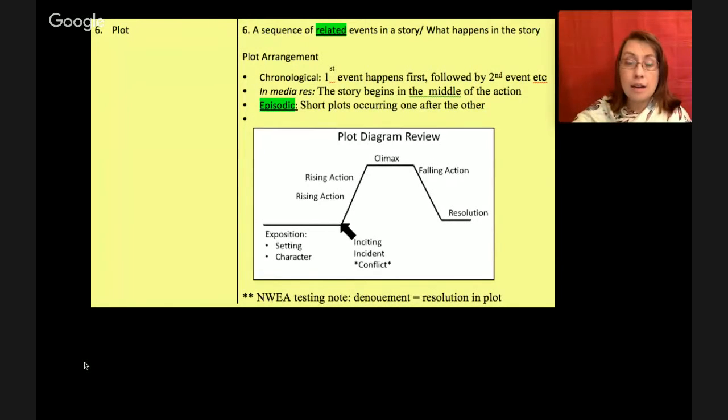Number six, our last section here is plot. And this is a sequence of related events in a story. It's basically what happens in the story. There are three types of plot arrangements I want to talk about. Most often a story is in chronological order. We have the beginning, the middle, and the end of the story. There's first event, second, third, on like that. The next one is a more creative type. It's called In Media Res. And this is where the story begins in the middle of the action. It makes you feel like you got dropped into the middle of the story and you're not sure what's going on for a while. And then usually they'll do a flashback, which means they go back in time and kind of explain some information.